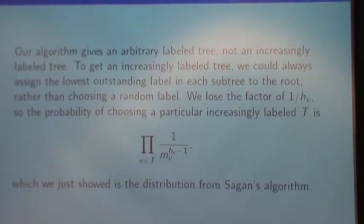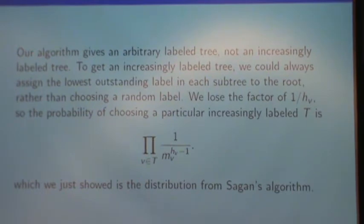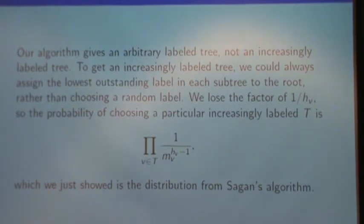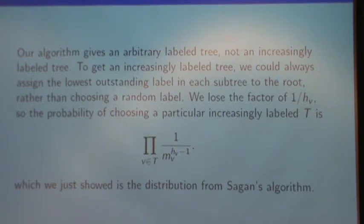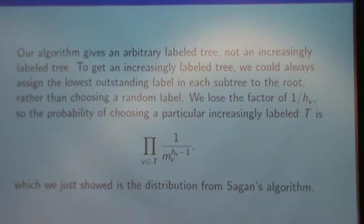So, what I said about the difference between our formula and Sagan's formula, besides the difference in the proof, is we found an arbitrarily labeled tree, and Sagan's result found an increasingly labeled tree. But we can modify our algorithm to find an arbitrarily labeled tree, because the first step of our algorithm was to assign a random label to the root. And instead, we could always assign the lowest outstanding label in a subtree to the root, rather than using a random label.